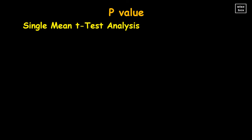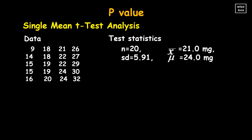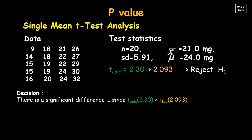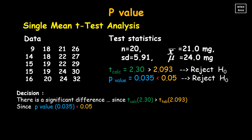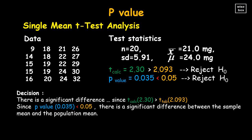Going back to the single mean t-test example: instead of using the calculated t-value, we can use the computed p-value of 0.035, which is less than 0.05. The null is rejected. Since the p-value of 0.035 is less than 0.05, there is a significant difference between the sample mean and the population mean.